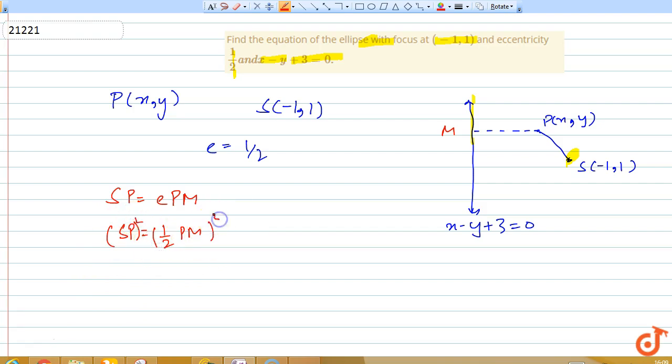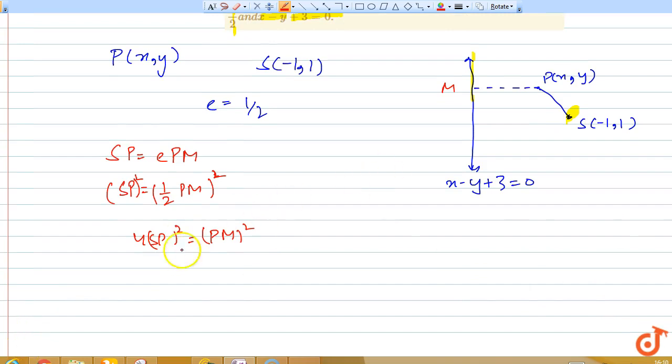Now SP is the distance between two points, and we know that if we have two points (x₁, y₁) and (x₂, y₂), then the distance between them is given by the formula.